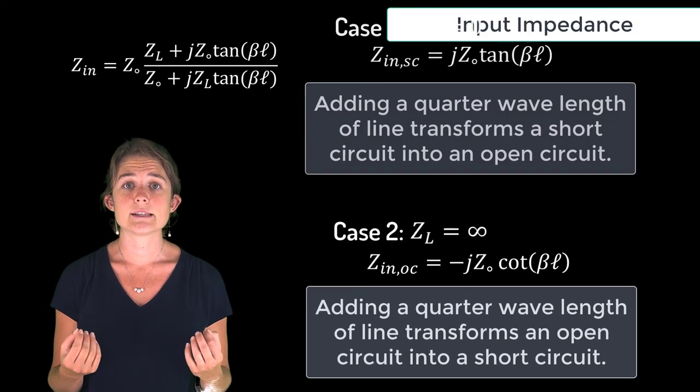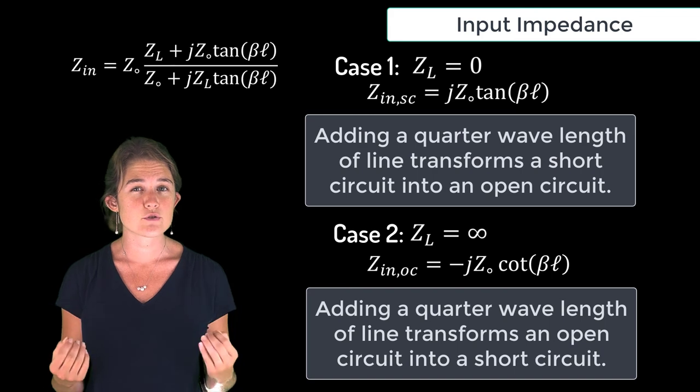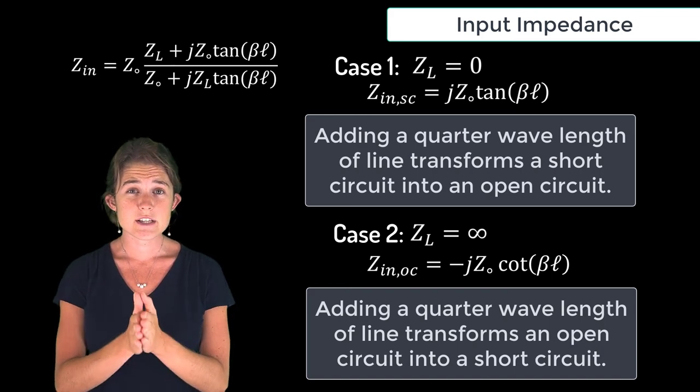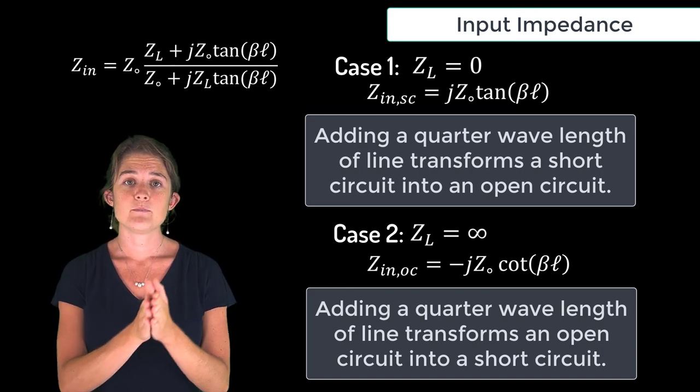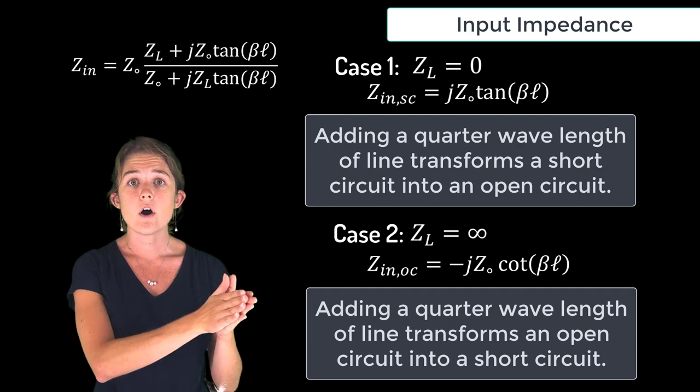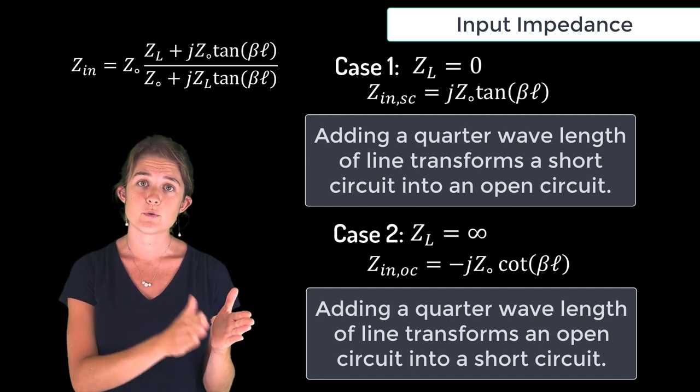These two cases demonstrate that the length of the added line is extremely important. By adding just a quarter wavelength of line you can transform a short all the way into an open or an open into a short.